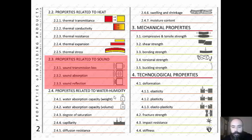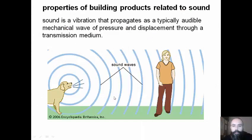Properties related to sound. Let's start with sound. Sound is a vibration that propagates as a typically audible mechanical wave of pressure and displacement through a transmission medium, mostly the air.